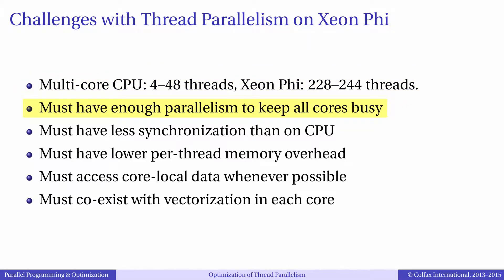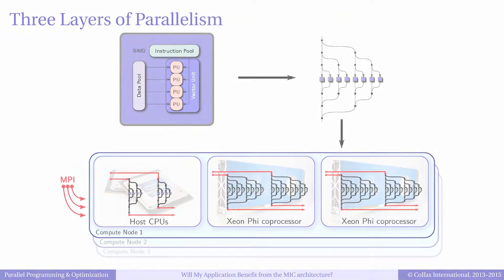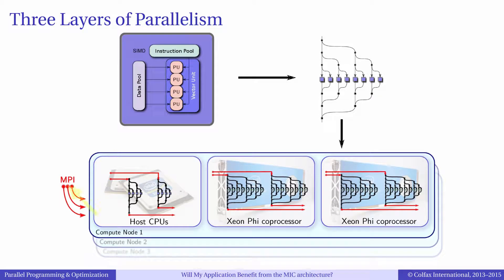Naturally, to have enough parallelism the problem must be large enough. In addition to that, the balance between different levels of parallelism must be chosen so that none of the parallel layers is under-saturated.